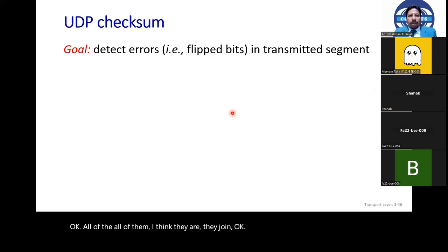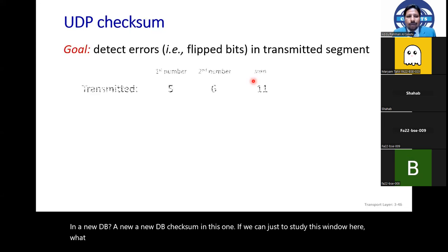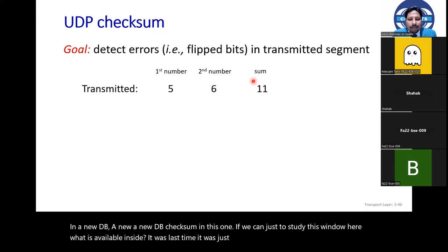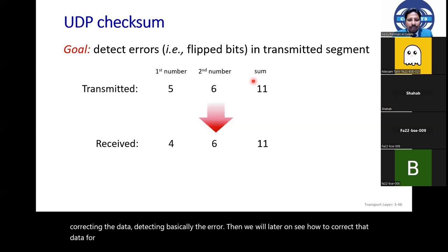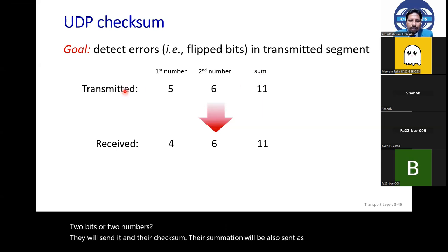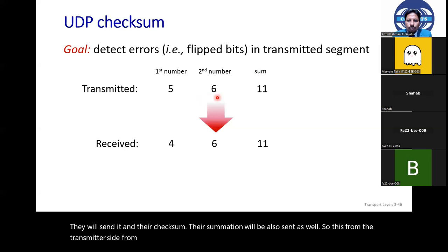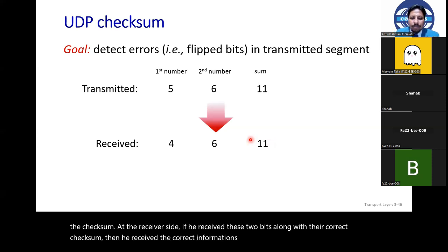Now in UDP, the checksum — what is available inside this window — was last time we said that the checksum means just detecting errors. We will later on see how to correct that data. For example, if the transmitter is sending two numbers, they will send the numbers and their summation as the checksum. From the transmitter side, he will send the two values and their summation as the checksum. At the receiver side, if he received these two values along with the correct checksum, then he received the correct information.